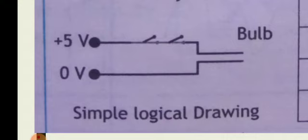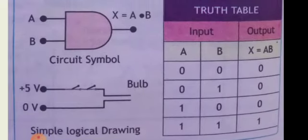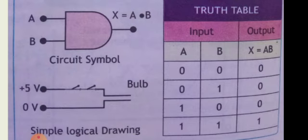As is clear from the figure, the bulb will only glow if both switches are on, showing the high value. If any one switch is off, the bulb will not glow. In the truth table, the output shows the low value if both inputs are low, or if any one input is low. There is only one condition in which the output shows a high value: when both inputs A and B show the high value. The best example of an AND gate is a battery.